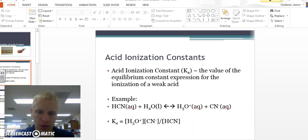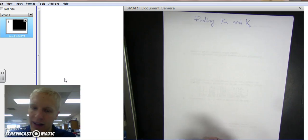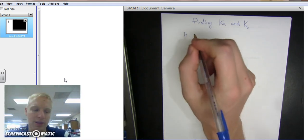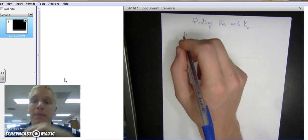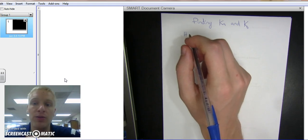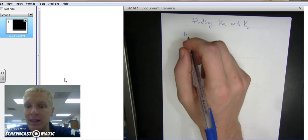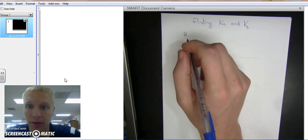So moving on to a different window, let's do a quick example. When we do Ka, it's just like finding Keq, where we have the concentration of the products divided by the concentration of the reactants equals the Ka.